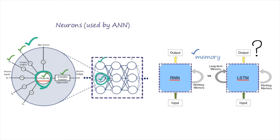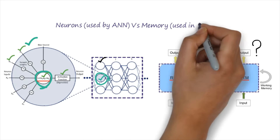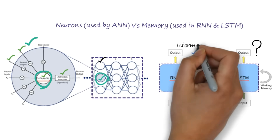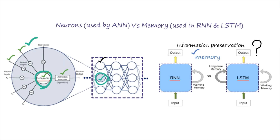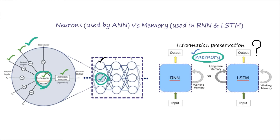The question is: why do we have to use memory instead of neurons? In RNN and LSTM, the model mainly focuses on information preservation — it has to predict something depending on the previous sequence. So it has to preserve the sequence, and for preserving this large amount of sequence, we have to use memory. We cannot use neurons for that purpose.